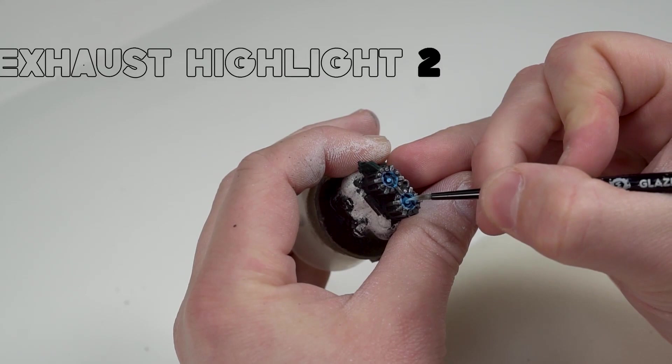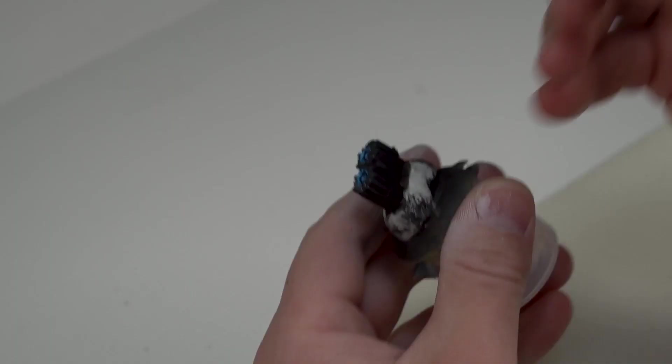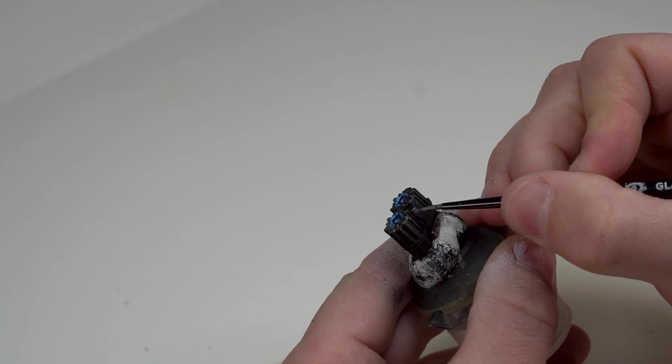Then the second highlight will be Sky Blue also by the Vallejo model color range. And for basic highlighting like this for best results a rule of thumb to follow is the brighter the section gets the narrower the surface areas that you should be painting. Now I'm just adding a little bit more metallic paint to the side exhausts here using the Silver by Vallejo game color range.